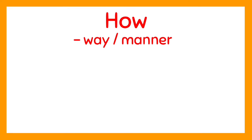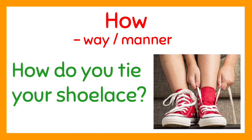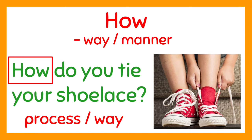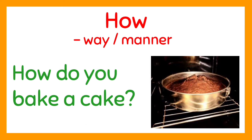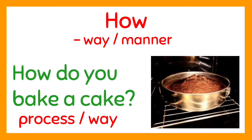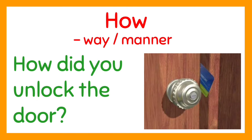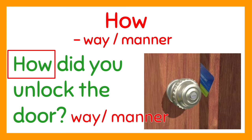Now let's move on to 'how.' How is used to ask about a process or the way or manner by which something is done. For example, 'How do you tie your shoelace?' How is used here because this question asks about the process or the steps of tying your shoelace. Next: 'How do you bake a cake?' This question asks about the process or way of baking a cake, so 'how' is used. Another example: 'How did you unlock the door?' How is used to ask this question because the person asking wants to know the way or manner by which you unlocked the door.